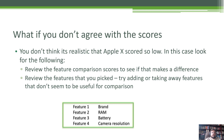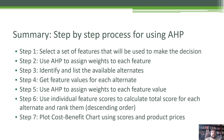I hope you understood this example. If you have any questions, feel free to send me an email. Just a summary — it's a very straightforward process. Step one: select features. Step two: use AHP to assign weight to each feature. Step three: identify the available alternates. Step four: get feature values for the alternates. Step five: use AHP to assign values for each feature. Step six: add up individual scores to get the final score for each alternate. Step seven: plot the scores versus price and take a decision. Thank you.